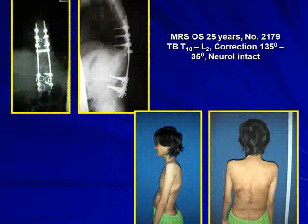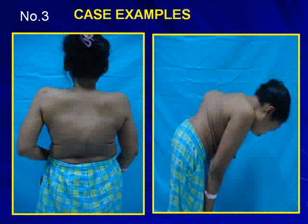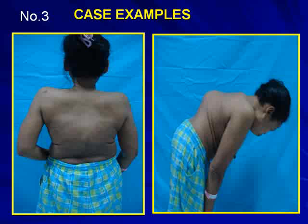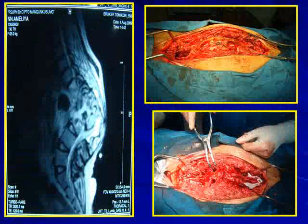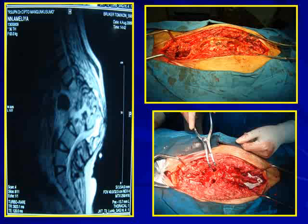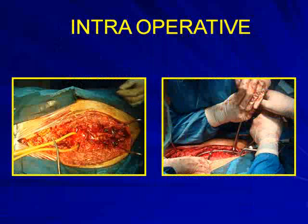We corrected from 125 degrees to 35 degrees, with neurological function still intact. Another case is a 35-year-old lady with 140-degree kyphosis at the thoracolumbar junction. This is the x-ray before surgery. During the distraction procedure, we put a laminar spreader in front of the vertebral body to preserve the spinal cord. This is the instrumentation used.